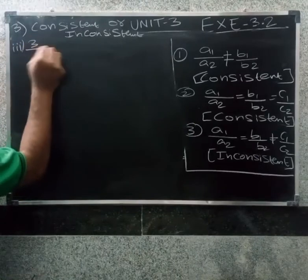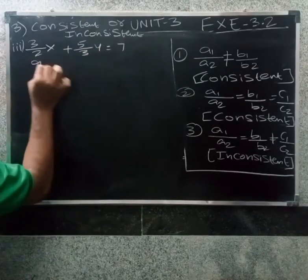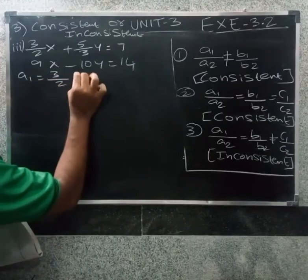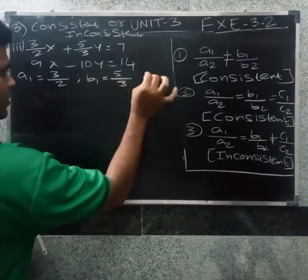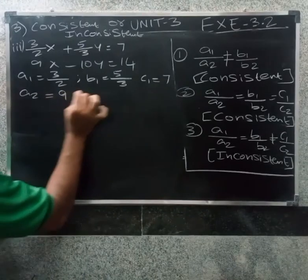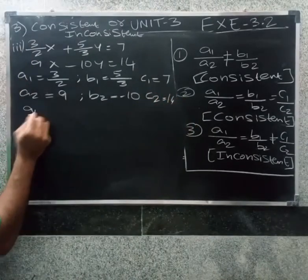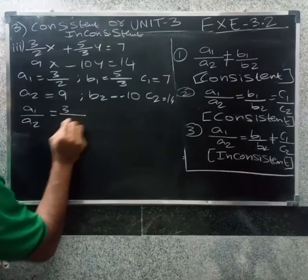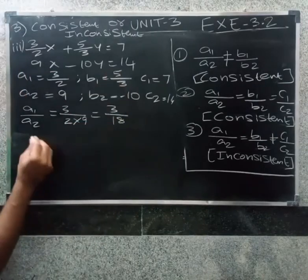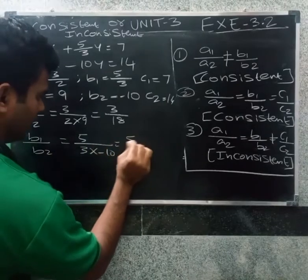Third problem: 3 by 2 times x plus 5 by 3 times y equal to 7, and 9x minus 10y equal to 14. So a1 value is 3 by 2, b1 value is 5 by 3, c1 value is 7. A2 value is 9, b2 value is minus 10, c2 value is 14. So a1 by a2 equals 3 by 2 divided by 9, which equals 3 by 18. Next b1 by b2 equals 5 by 3 into minus 10, so 5 by minus 30.